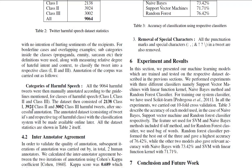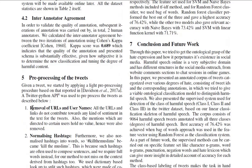After annotation, class 1 has 2,138 tweets, class 2 has 3,924, and class 3 has 3,002 tweets. The annotated data will be made available online. For inter-annotator agreement, two human annotators performed subsequent iterations and Cohen's kappa coefficient was calculated at 0.689, indicating substantially effective annotation quality given how subjective it is to determine degree of harmful content across fine-grained labels.